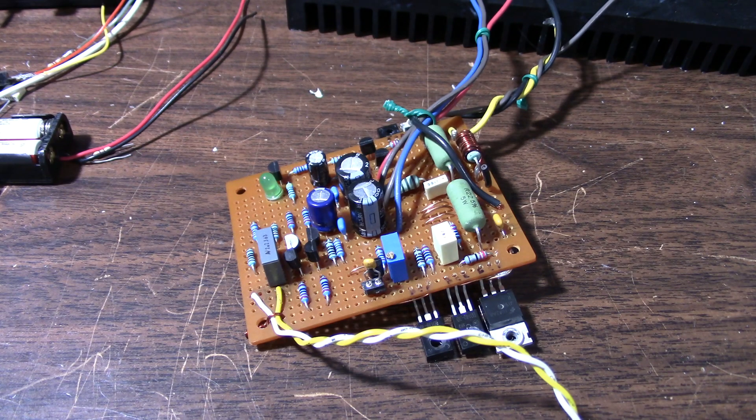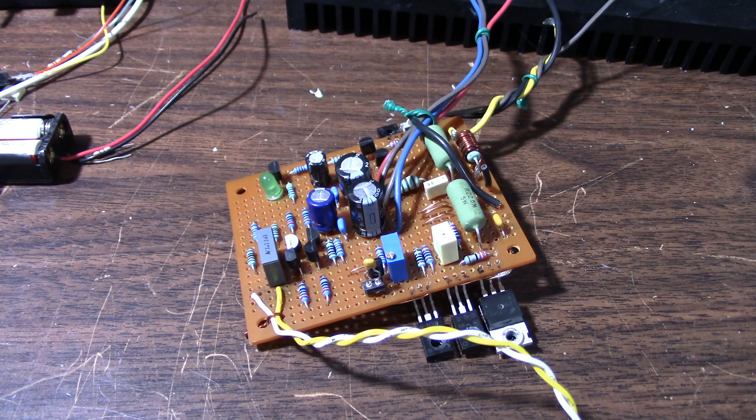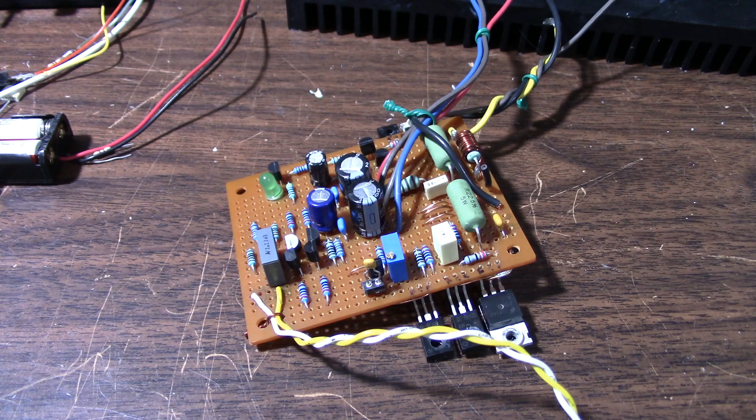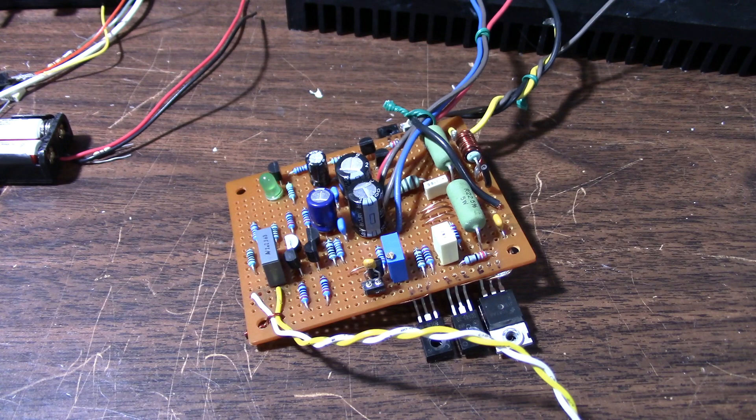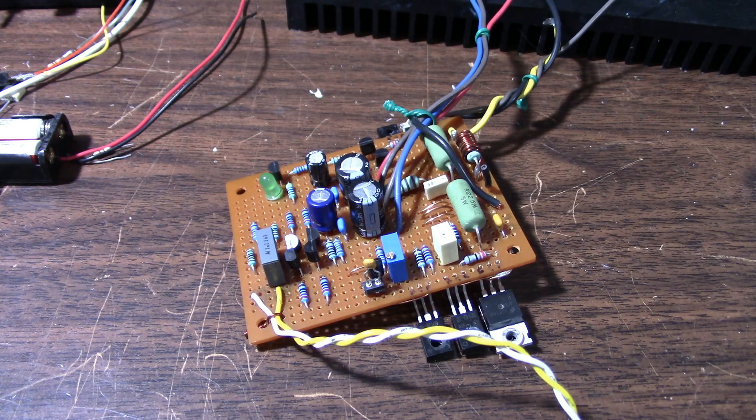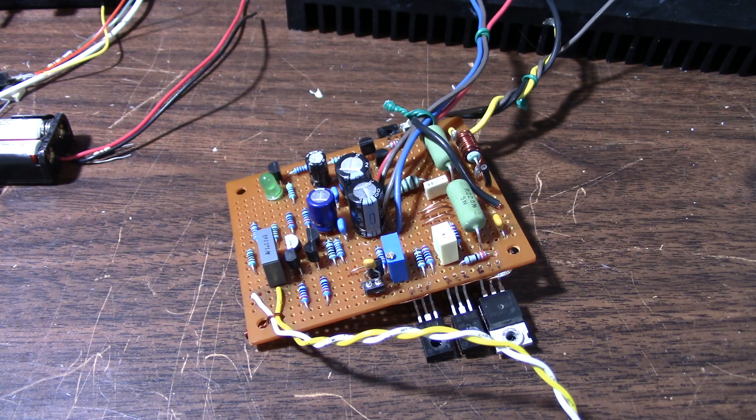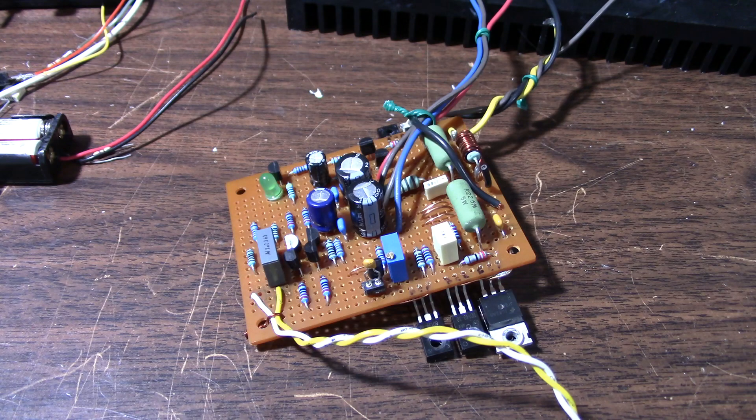So I mentioned in the other video that I was using what's known as Miller compensation, with the Miller cap that, in this case, is across the collector to base of the voltage amplification stage transistor, which allows this amplifier to be stable, or so we hope. Before we get started on that, I did make a lot of changes to this board. I'm going to run through all the changes that I made.